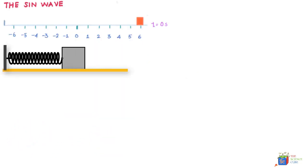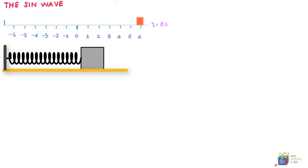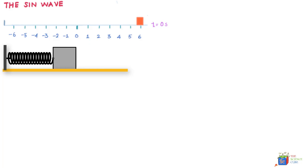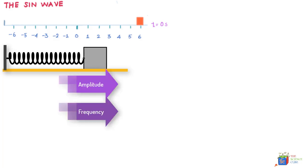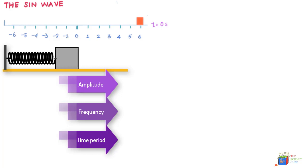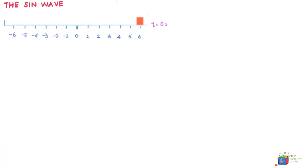What we learned in the last lesson was that when a body undergoes an oscillation or simple harmonic motion, the oscillating body has a certain amplitude, frequency, and time period. In this lesson we'll try to connect the displacement X of such a body with time through an equation — in other words, we'll find an equation that can tell us the displacement of such a body at any time T.